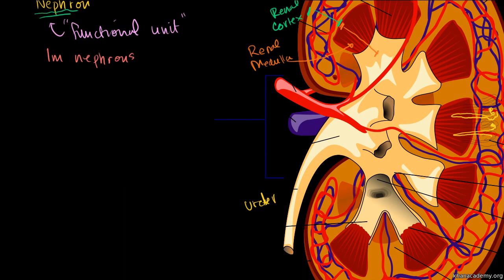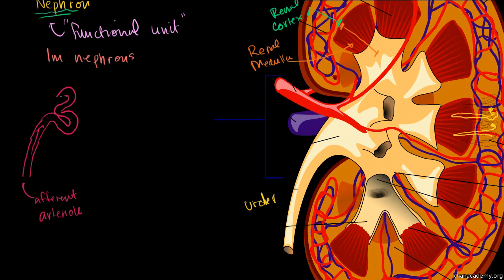I'll start with the blood flow. Blood comes in via an arteriole — this is called the afferent arteriole. It then goes into a big winding capillary structure called the glomerulus. Blood then leaves via the efferent arteriole. 'Efferent' means away from the center, while 'afferent' means toward it.